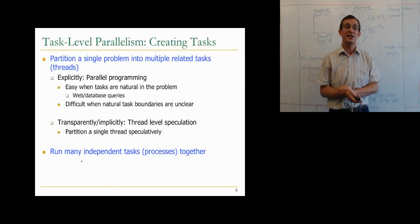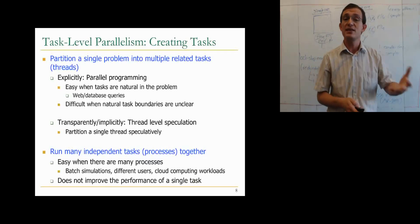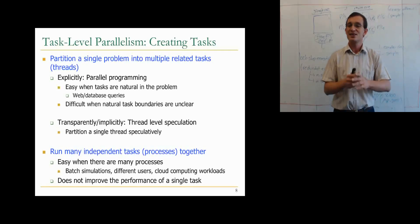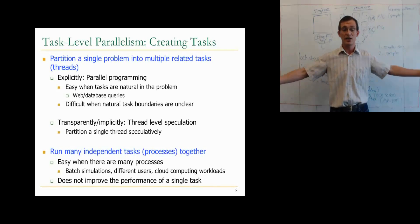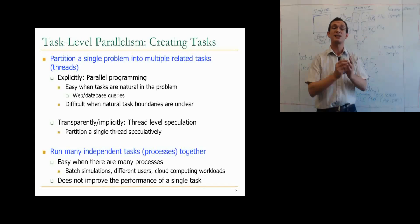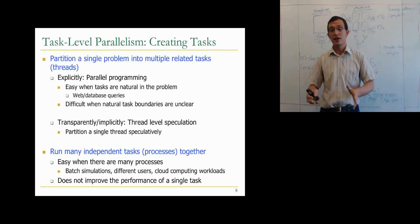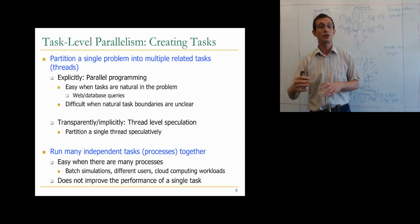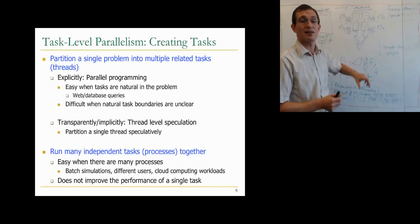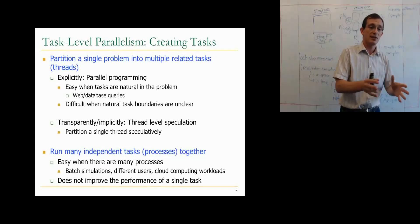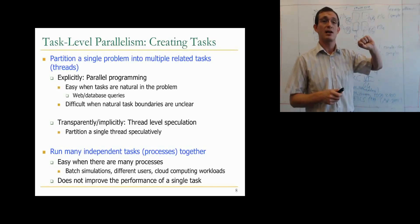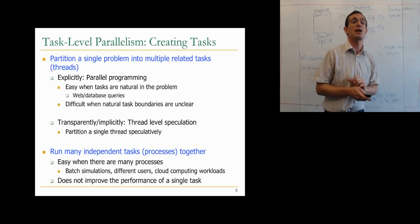The second way of generating task-level parallelism is running many independent tasks or processes together — not dividing a single problem, but collecting many independent tasks. This is easy when there are many processes: batch simulations, different users multitasking, or cloud computing workloads where many independent jobs are sent to processors. The difficulty is it doesn't help the performance of a single task. These represent two different kinds of parallelism: partitioning a single problem versus running multiple independent problems together.